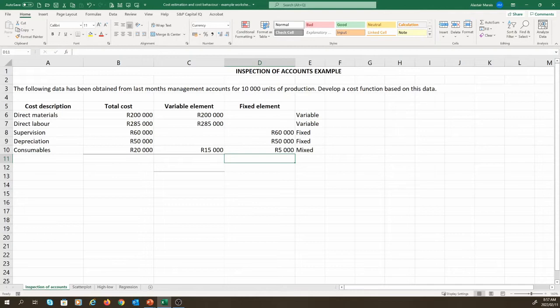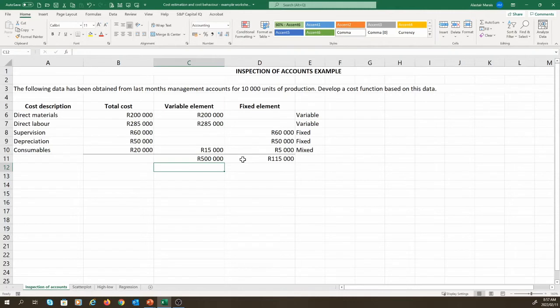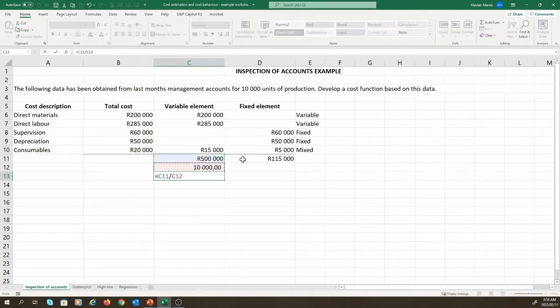Now, we haven't reached the end yet. We need to come up with a cost function. The fixed element is fine, as it simply remains in total. For the variable element, however, we need to identify an appropriate cost driver. In this instance, we again use our judgment and come up with units produced of 10,000 units as our cost driver. So, we can simply take the total variable cost, and divide it by the number of units to get the cost per unit. And we arrive at a cost per unit of 50 Rand.